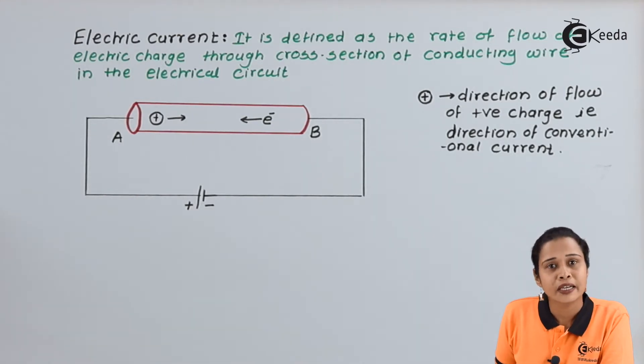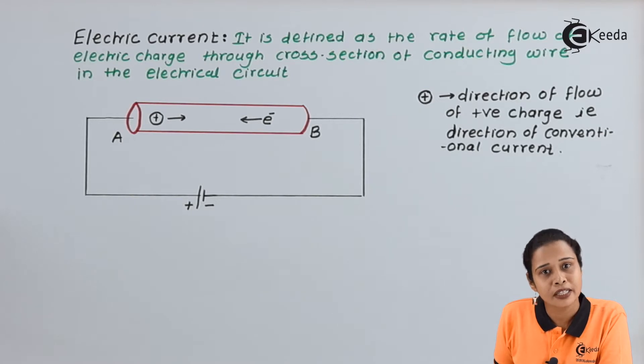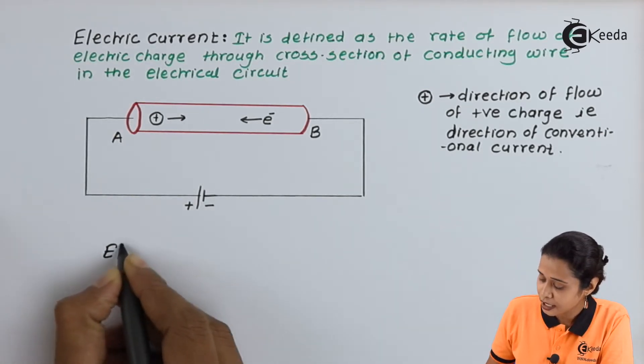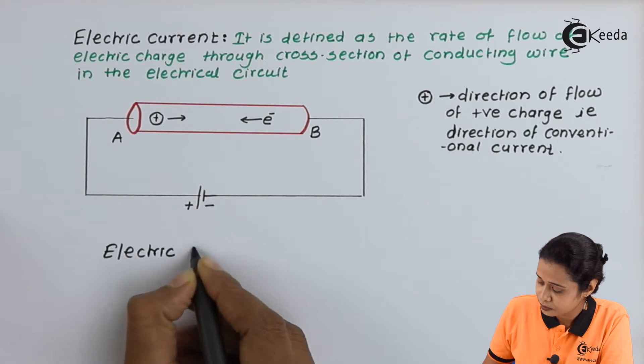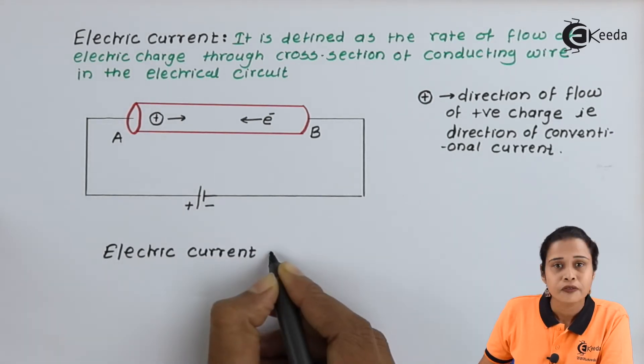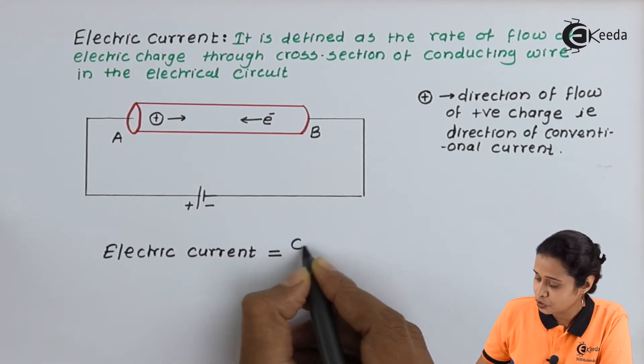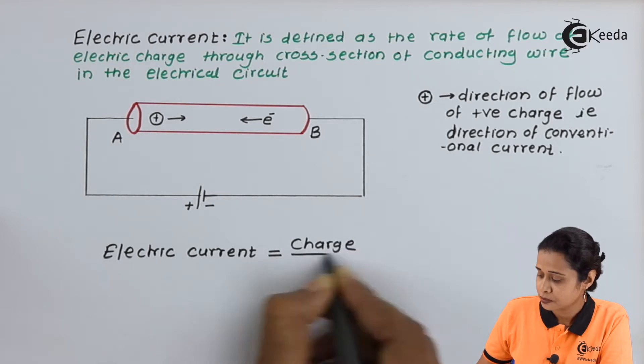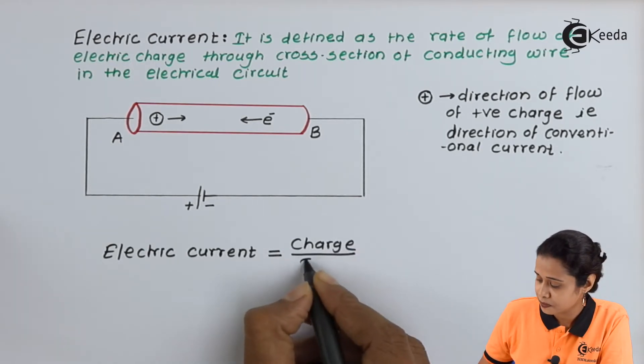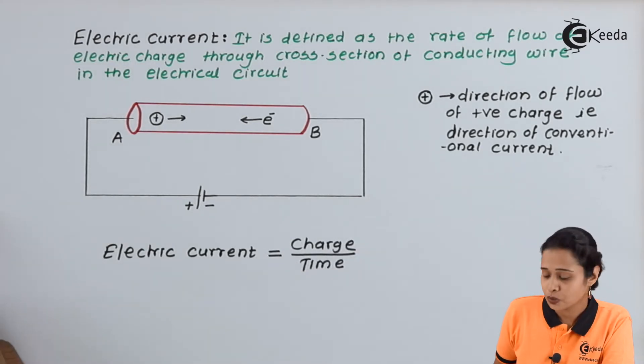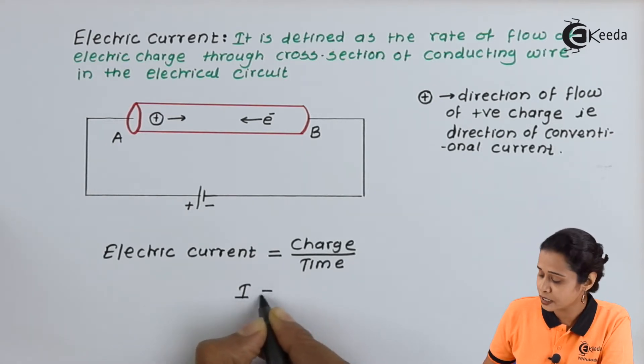Now, electric current can be defined in another way also. We can write down here electric current, which is equal to charge upon time. So, here we can write electric current, I is equal to Q by T.